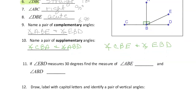If angle EBD measures 30 degrees, find the measure of angle ABE. ABE is part of that right angle, so it has to be 60 degrees. And angle ABD is the entire thing, so that's 90 degrees.